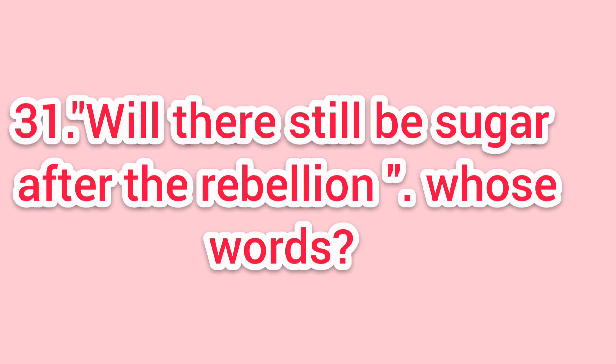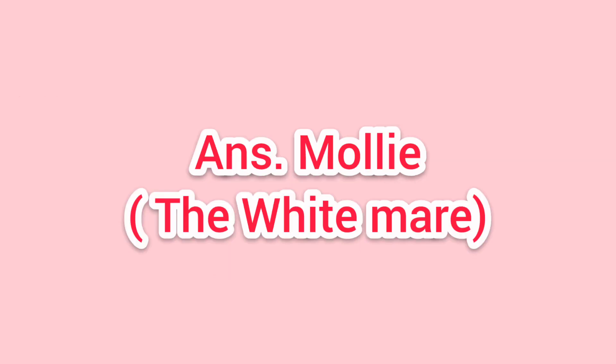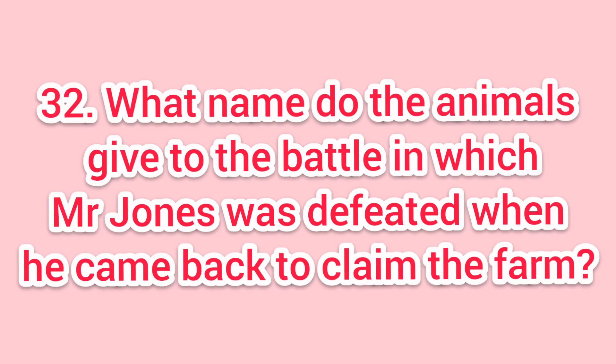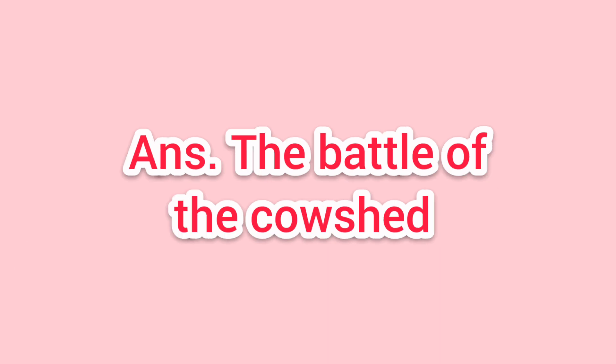Thirty-one: 'Will there still be sugar after the rebellion?' Whose words? Answer: Molly, the beautiful white mare. Thirty-two: what name do the animals give to the battle in which Mr. Jones was defeated when he came back to claim the farm? Answer: the Battle of the Cowshed.